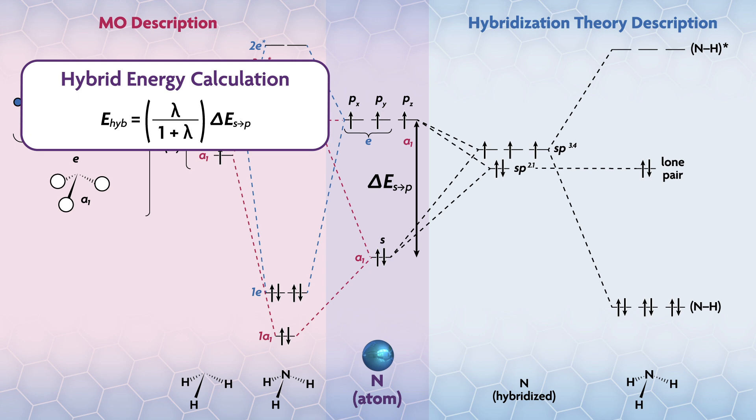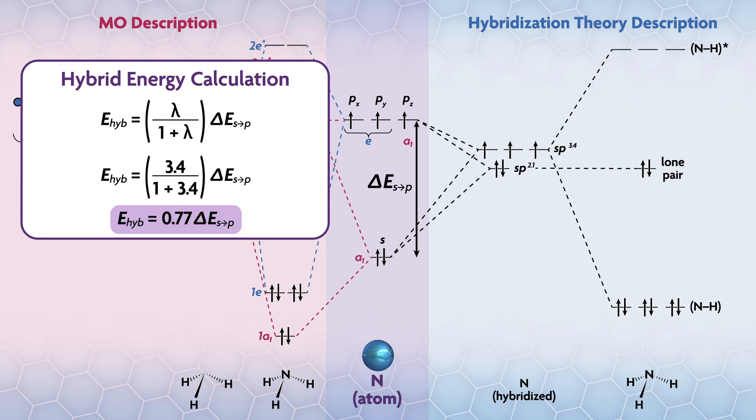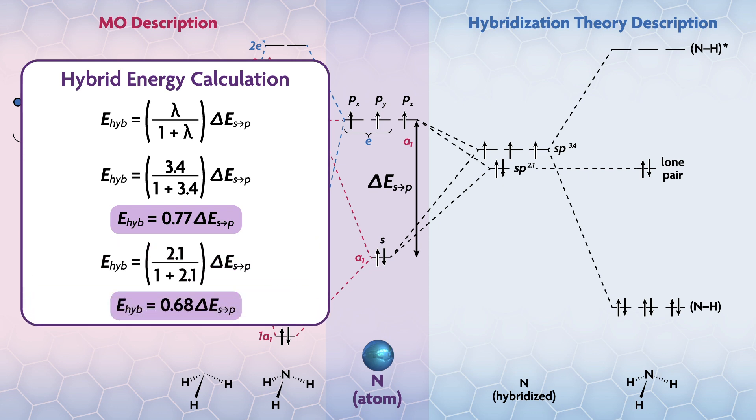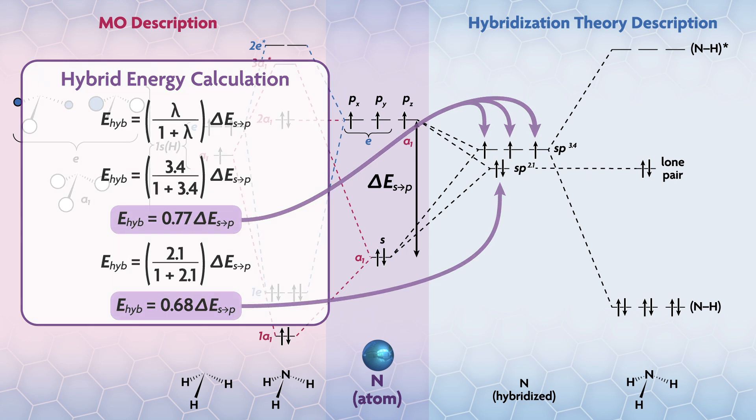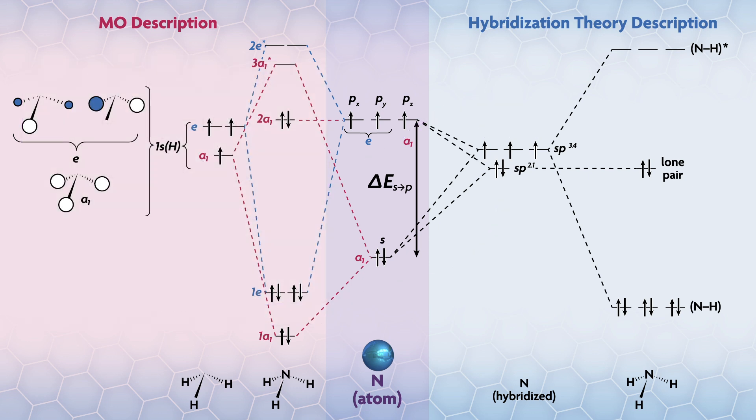Other hybrids are in between. Our hybrids used to form the bonds are sp^3.4, so their energy is 0.77 ΔEsp. So the sp^3.4 hybrid is about 77% of the way up from s to p. For the lone pair, we can use the same equation and find the energy is 0.68 ΔEsp, so about 68% of the way from s to p. Our hybrid picture looks something like this. Note that these sp^3.4 hybrids are directly pointed at the hydrogen, so we don't need to do anything else. We just overlap them and form bonding and antibonding orbitals to get our completed diagram.